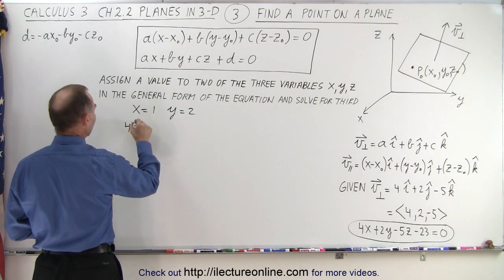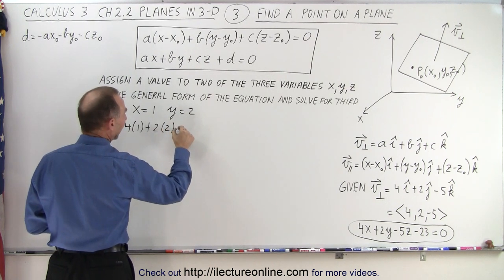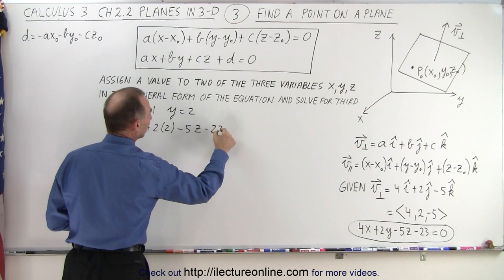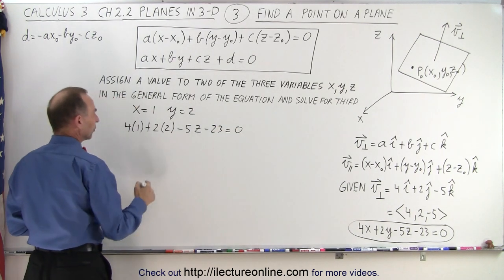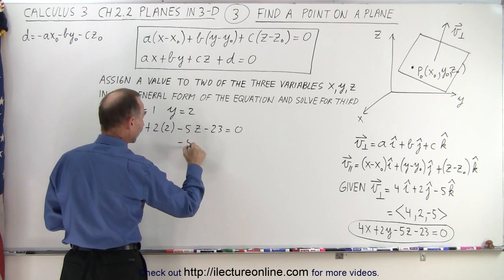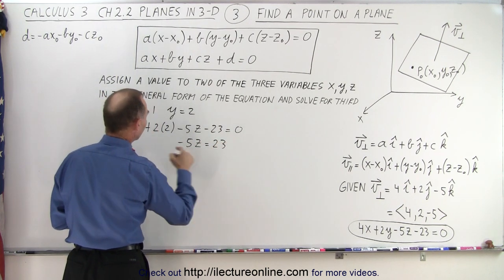So we have 4 times 1 plus 2 times 2 minus 5 times z minus 23 is equal to 0. So plug in everything else while simplifying that. So we have minus 5z is equal to, bring 23 across, we get plus 23, minus 4 and minus 4.